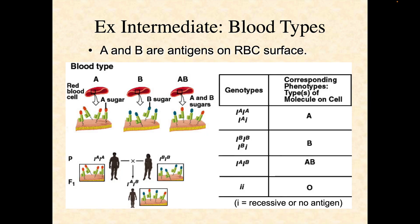Some examples in human beings of intermediate or codominance would be blood types, because A and B are antigens on the surface of the red blood cell. You can have different combinations of these antigens — they're both going to be expressed. So you have A antigen being produced and the B antigen if both are present. No antigens would be an O blood type. You can have blood type A with A antigens, blood type B with B antigens, or AB with both antigens, and O if there are no antigens.